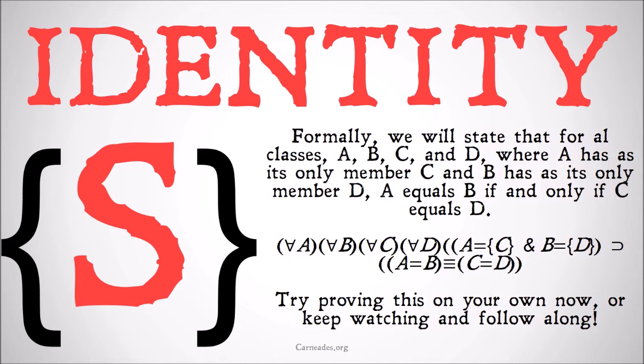Formally, we will state that for all classes A, B, C, and D, where A has as its only member C and B has as its only member D, A equals B if and only if C equals D. Hopefully that makes sense as a kind of formalization of that general statement.